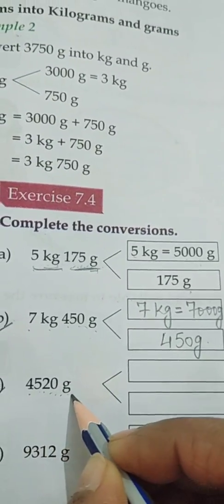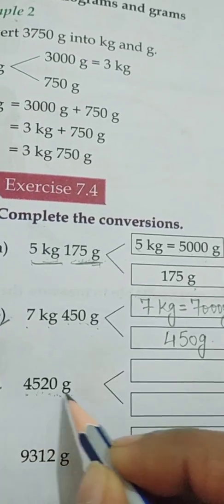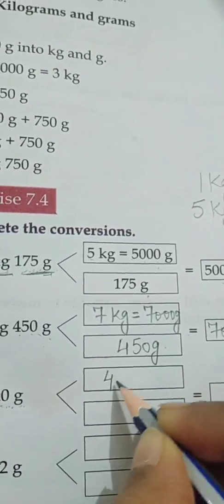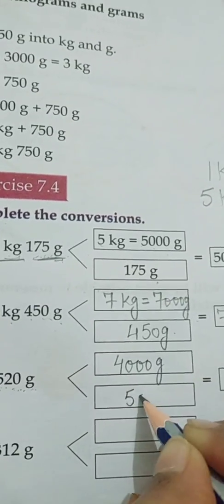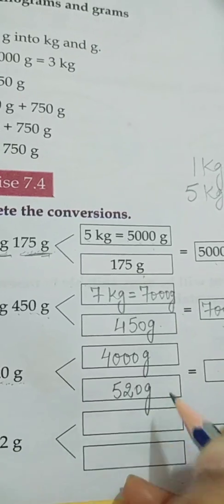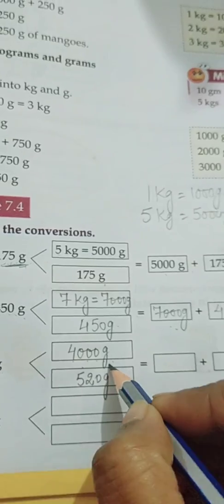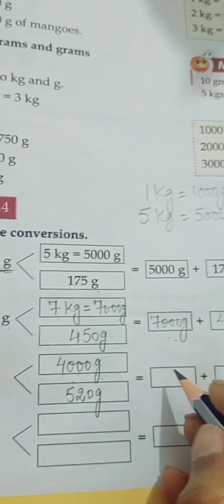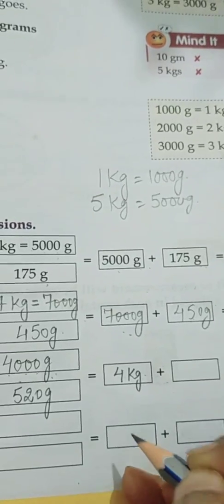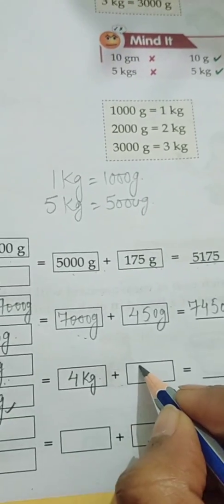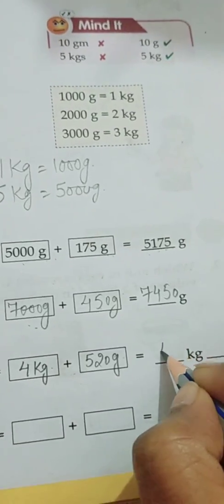The next conversion is four thousand five hundred twenty grams — that is 4520. We write this as 4000 grams and 520 grams. 4000 grams converted into kilograms is 4 kilograms. So the answer is 4 kilograms 520 grams.